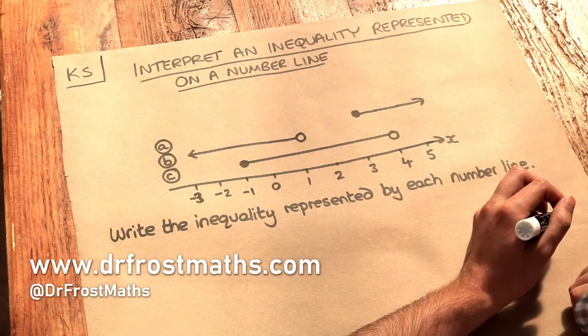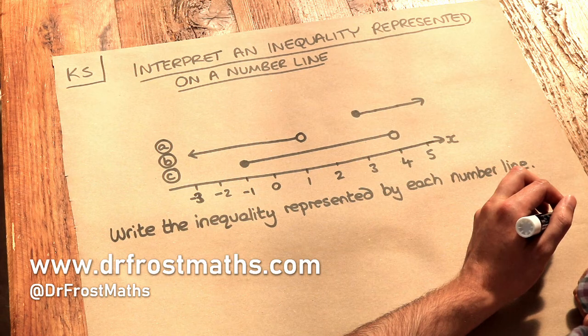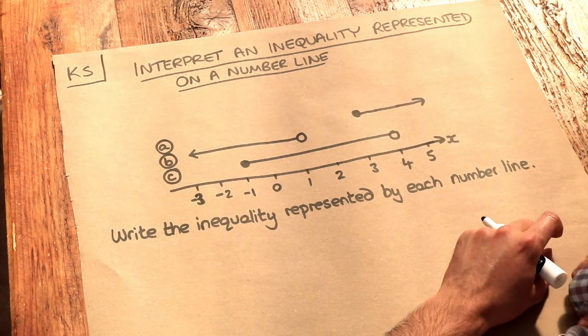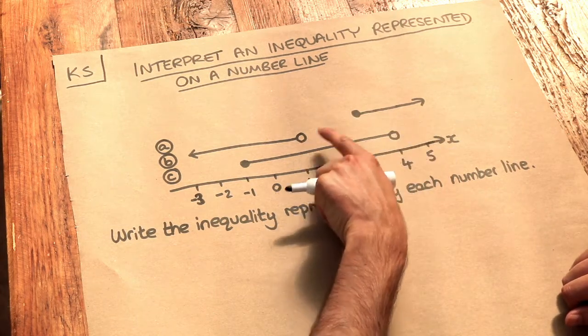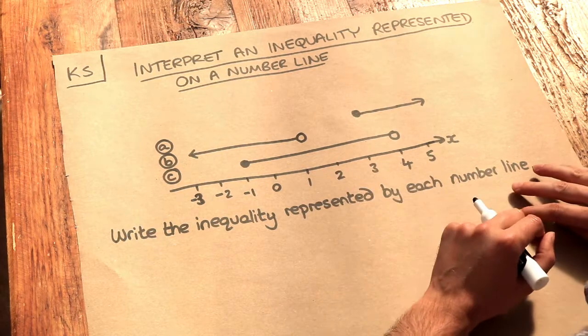Hello and welcome to this Dr. Ross Maths key skill video on interpreting an inequality represented on a number line. So we have this number line here in terms of x, and we've got these sorts of dots, maybe filled dots or not filled dots, and arrows. So what's going on here?